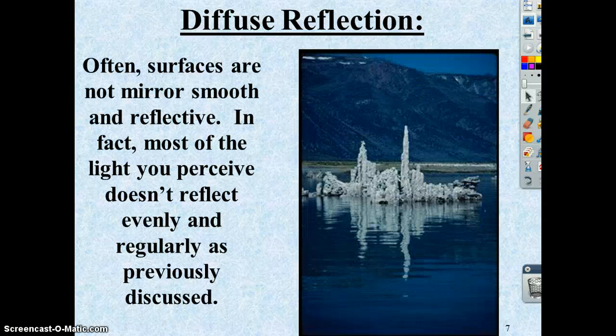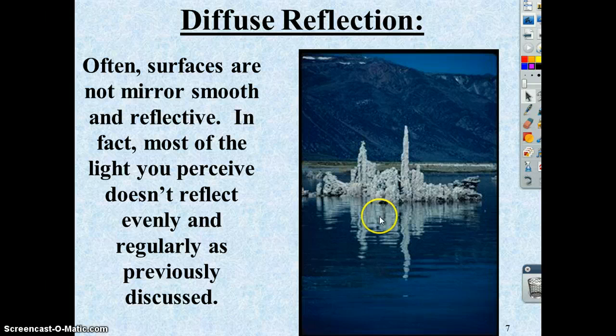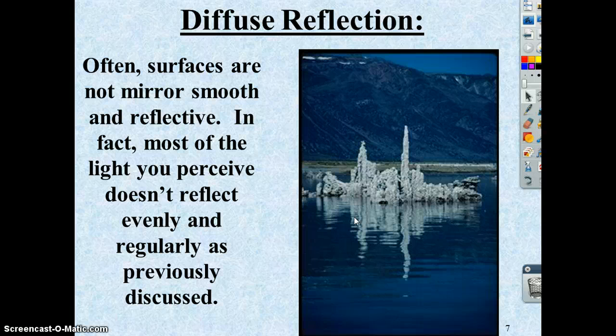But if you were to have a surface that is not perfectly smooth, like in this little lake here, notice that the image is distorted somewhat. And that has to do with the fact that when light strikes the surface, it's kind of up and down, up and down. And you'll see that in the next slide here.